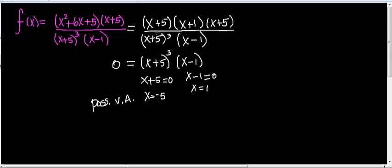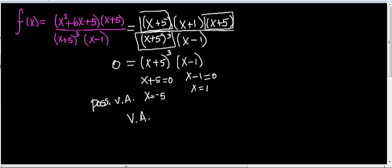That gives me zero in both numerator and denominator, so now I compare the multiplicities of this zero. The multiplicity of (x plus 5) in the numerator is 2 — this zero repeats twice. In the denominator, this zero has a multiplicity of 3. Since the multiplicity in the numerator is less than in the denominator, this is a vertical asymptote.